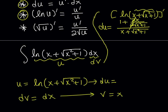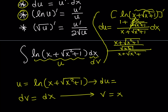When you make a common denominator, the 2 cancels out. Don't forget to multiply by dx, otherwise you'll lose points. This gives you x plus the square root of x squared plus 1 divided by the square root of x squared plus 1, all divided by x plus the square root of x squared plus 1. Cross those out and you end up with 1 over the square root of x squared plus 1, times dx, for du.